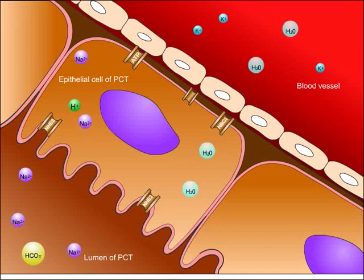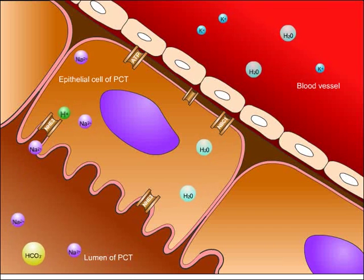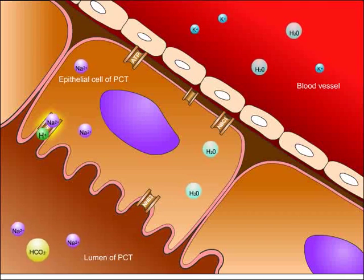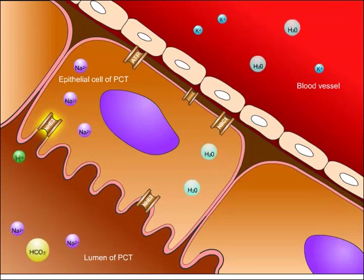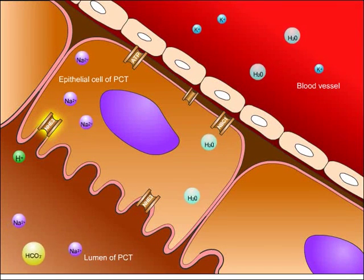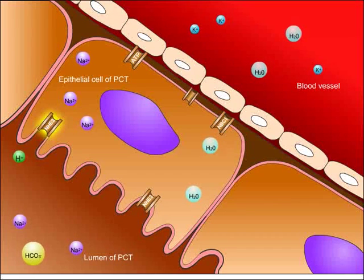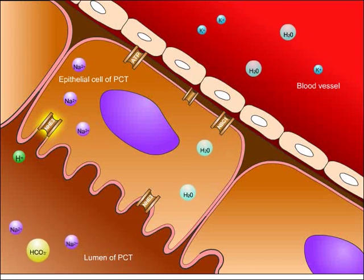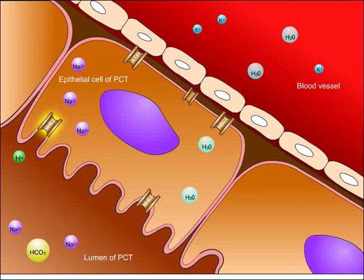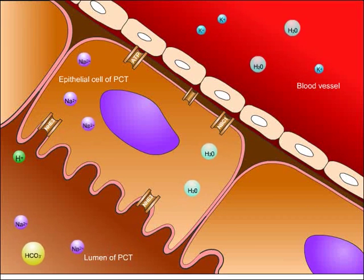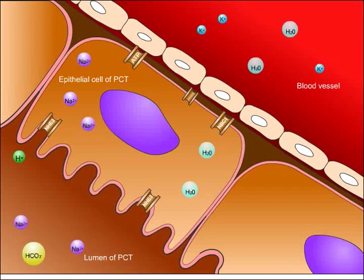Epithelial cells of the proximal tubule allow sodium to enter the cell and hydrogen to leave the cell through a channel known as the sodium-hydrogen antiport or exchanger, labeled here as NHE3. This channel is located on the luminal side of a proximal tubule cell, placing it in direct contact with the filtrate after it passes through the Bowman's capsule.